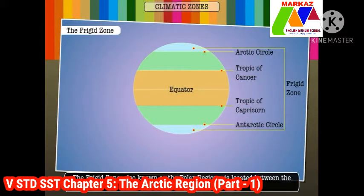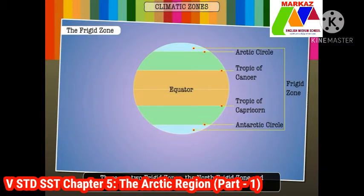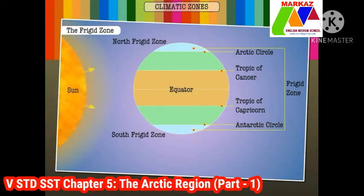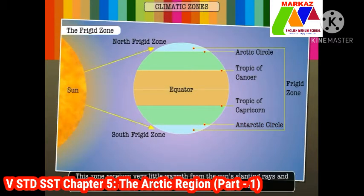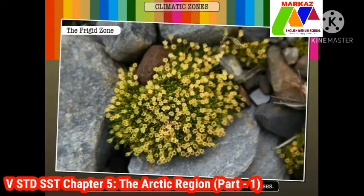The frigid zone, also known as the polar regions, is located between the poles and the temperate zones. There are two frigid zones: the north frigid zone, which lies between the north pole and the Arctic Circle, and the south frigid zone, which lies between the south pole and the Antarctic Circle. This zone receives very little warmth from the sun's slanting rays and hence remains cold and dry throughout the year. It is home to vegetation such as grasses, lichens, and mosses.